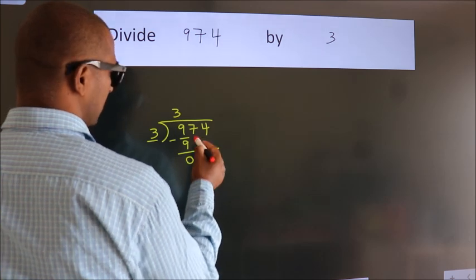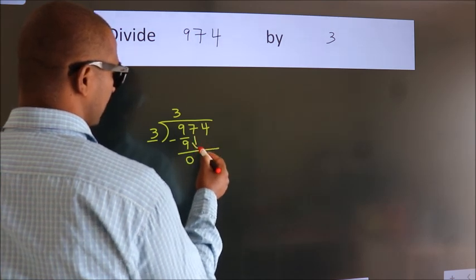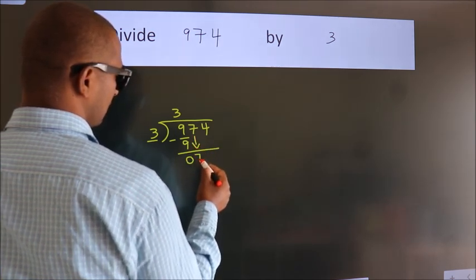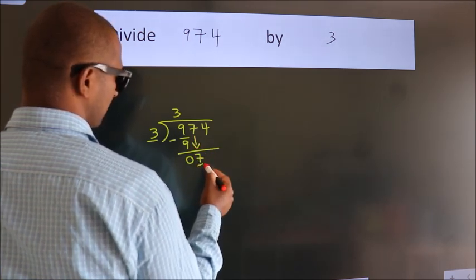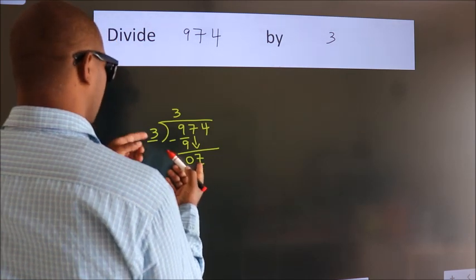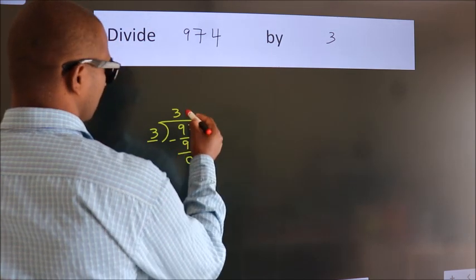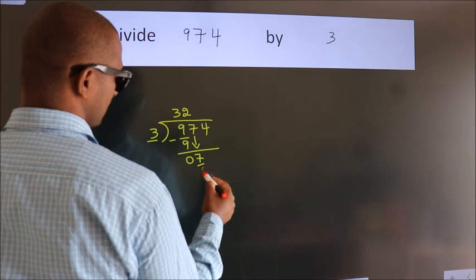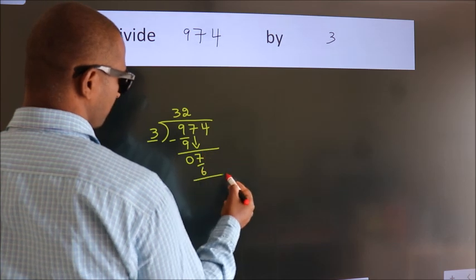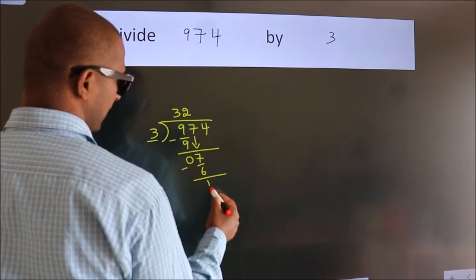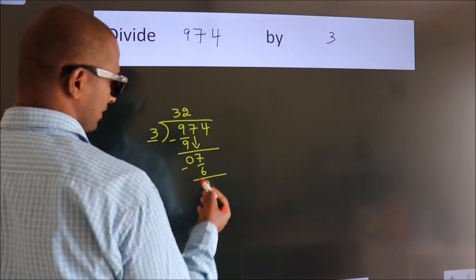After this, bring down the beside number. So 7 comes down — so 7. A number close to 7 in the 3 times table is 3 times 2 is 6. Now we subtract. We get 1.